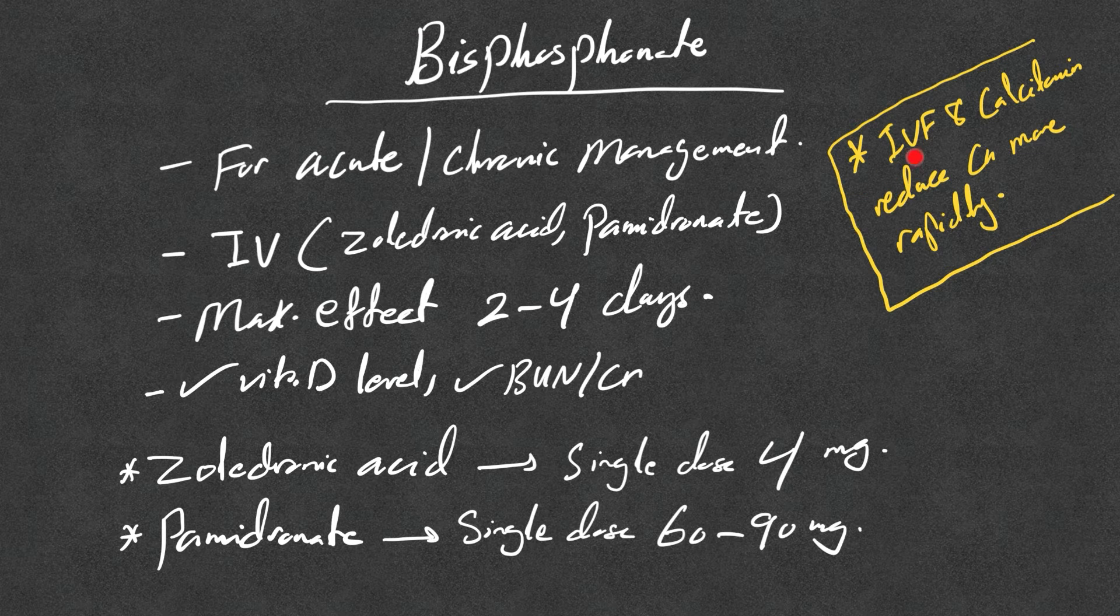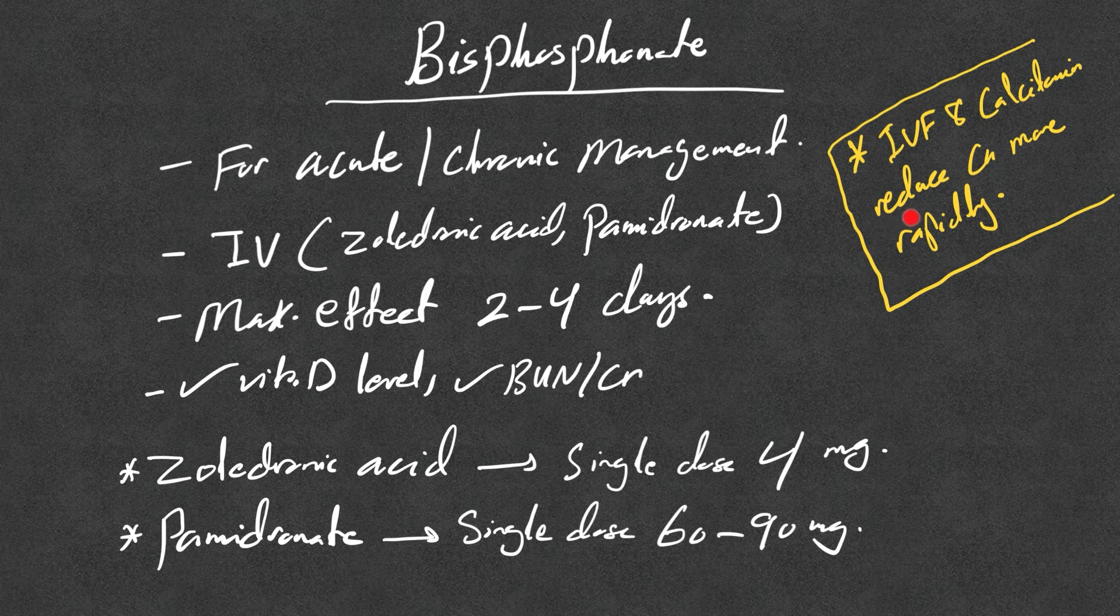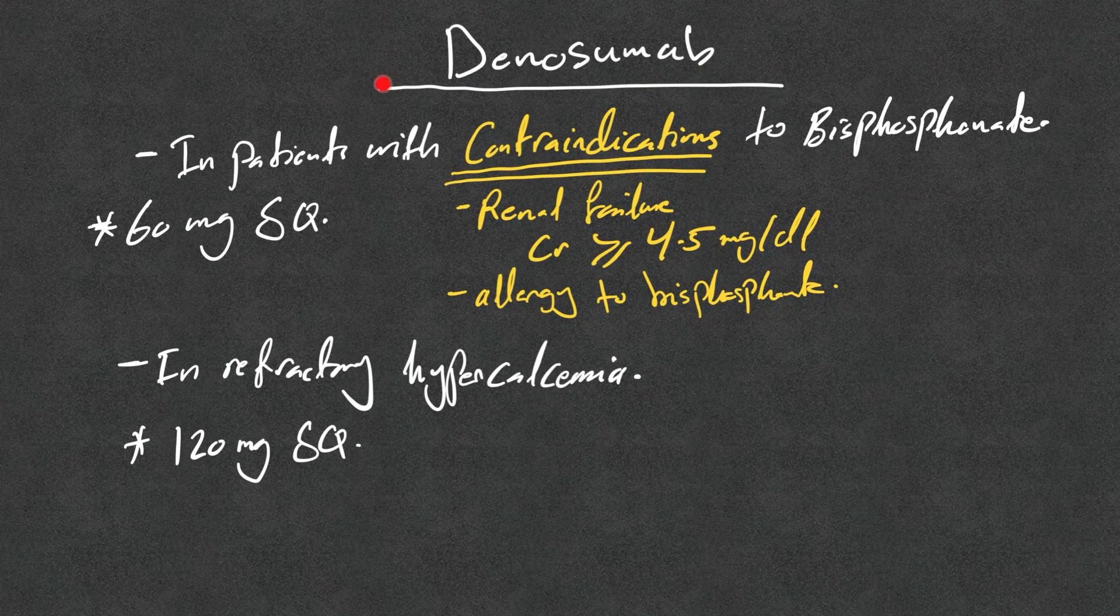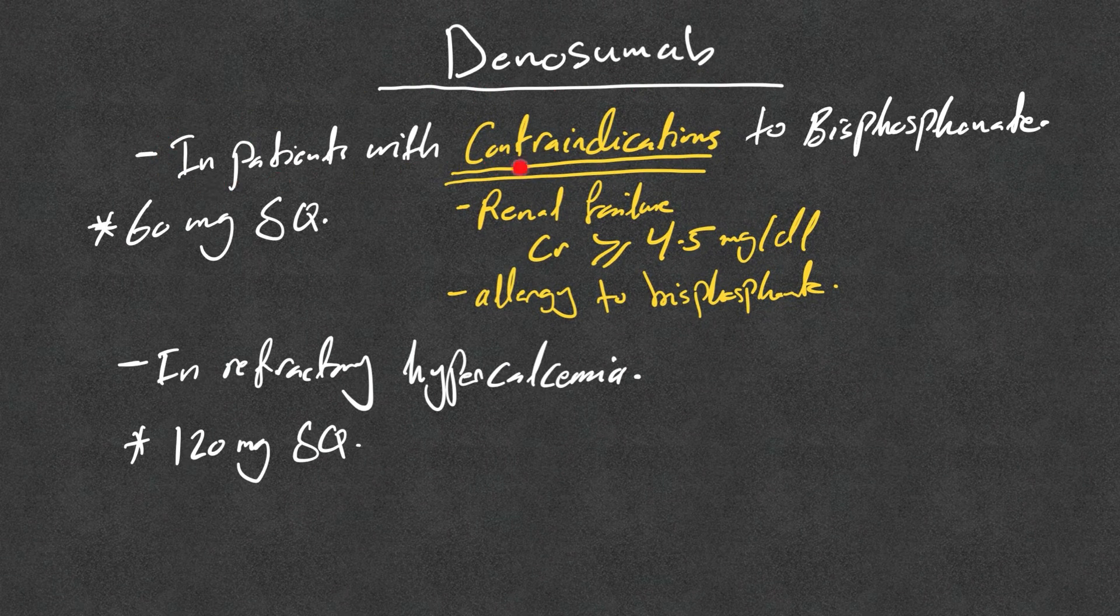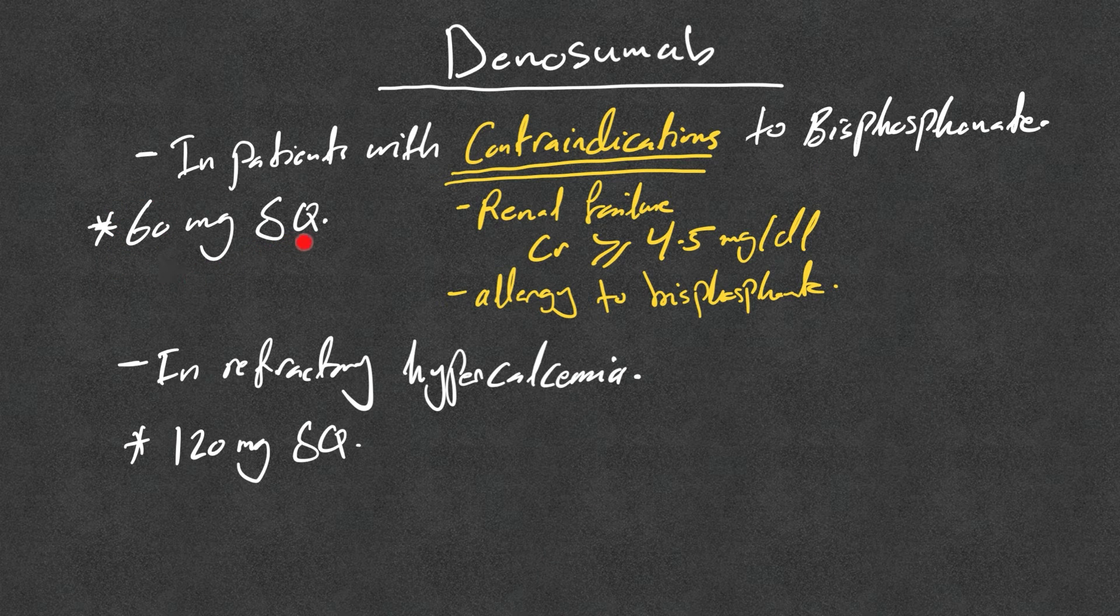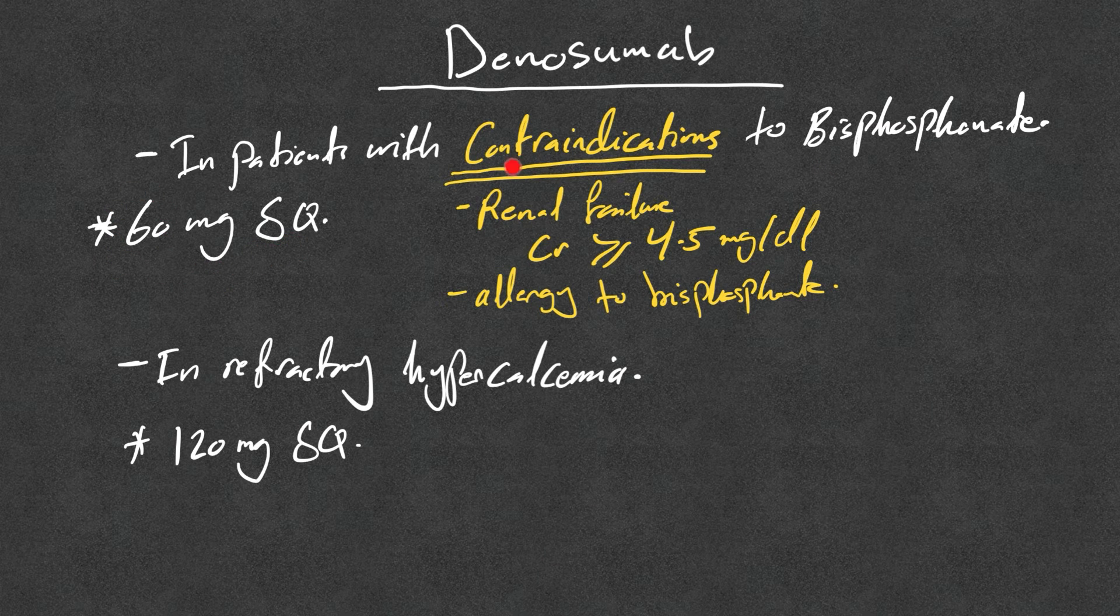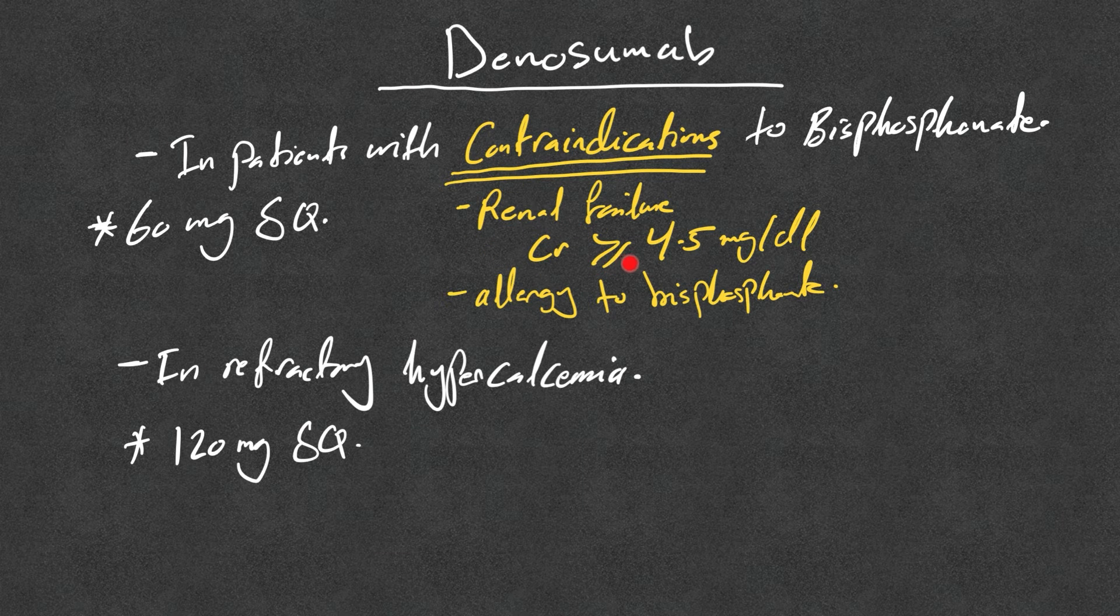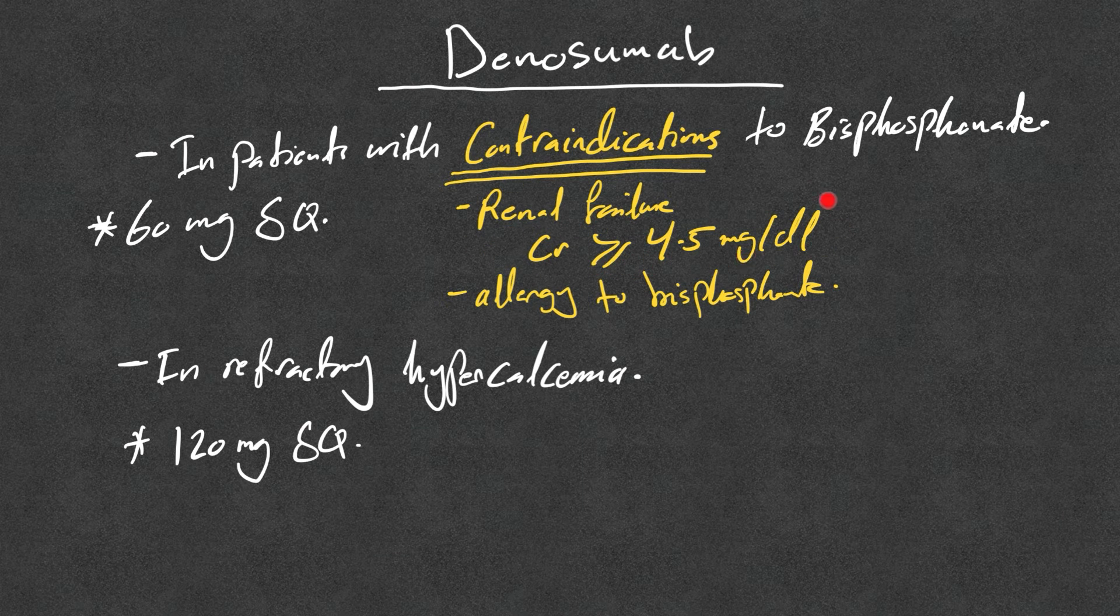Now very important: IV fluid and calcitonin, as we mentioned, reduce calcium more rapidly compared to bisphosphonate. Denosumab is another medication that can be used in patients with contraindication to bisphosphonate, and we give 60 milligrams subQ once. And the contraindication for bisphosphonates are renal failure, creatinine above or equal to 4.5 milligrams per deciliter, and if there is allergy to bisphosphonate.